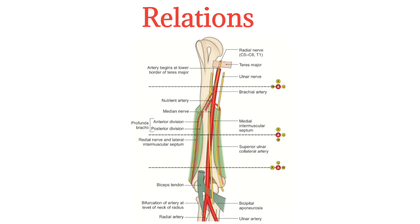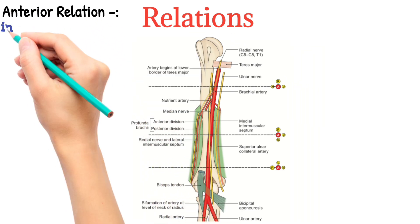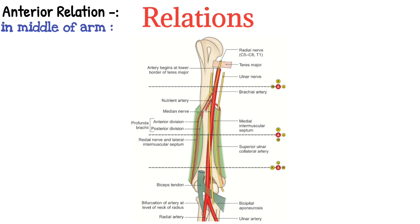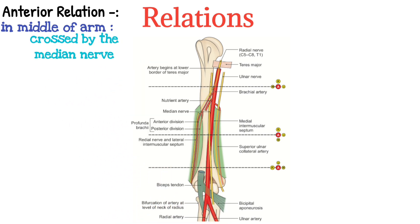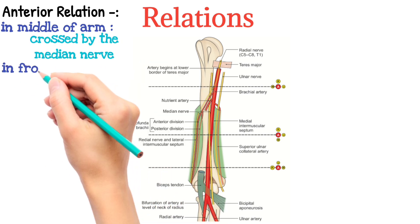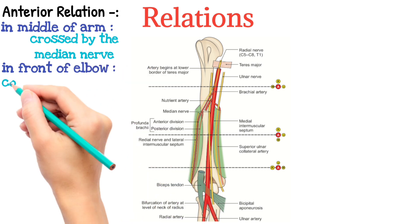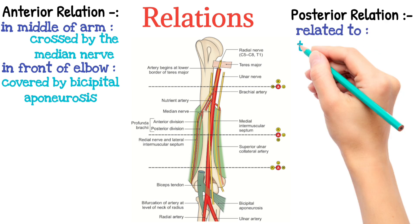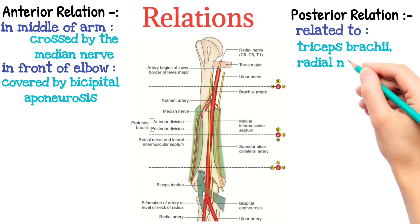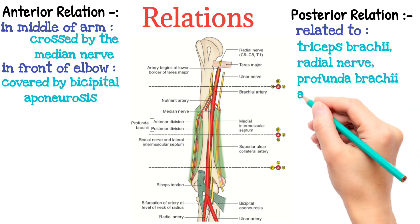Relations to the brachial artery. Anteriorly, in the middle of the arm, it is crossed by the median nerve from the lateral to the medial side. And in front of the elbow, it is covered by the bicipital aponeurosis. Posteriorly, it is related to the triceps brachii, radial nerve, and profunda brachii artery.